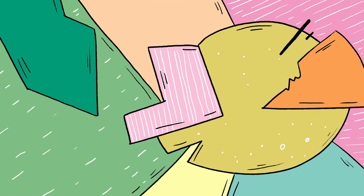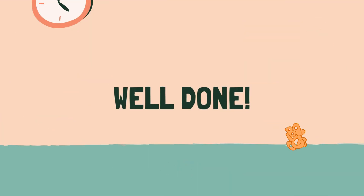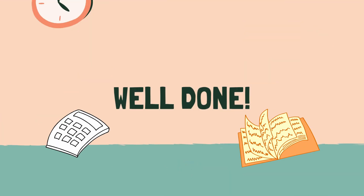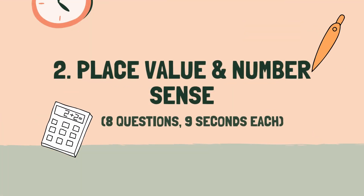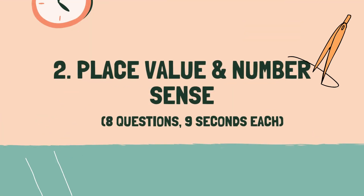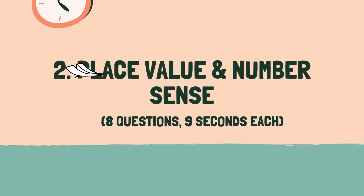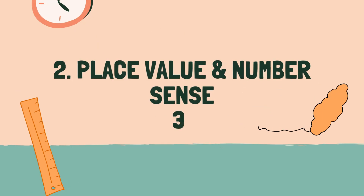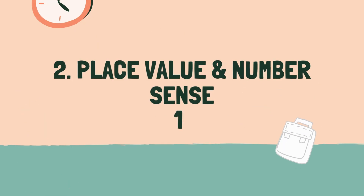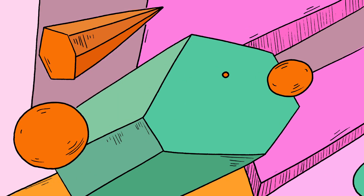Well done. Let's move on to the next category. Category 2: Place Value and Number Sense. 3, 2, 1, go.